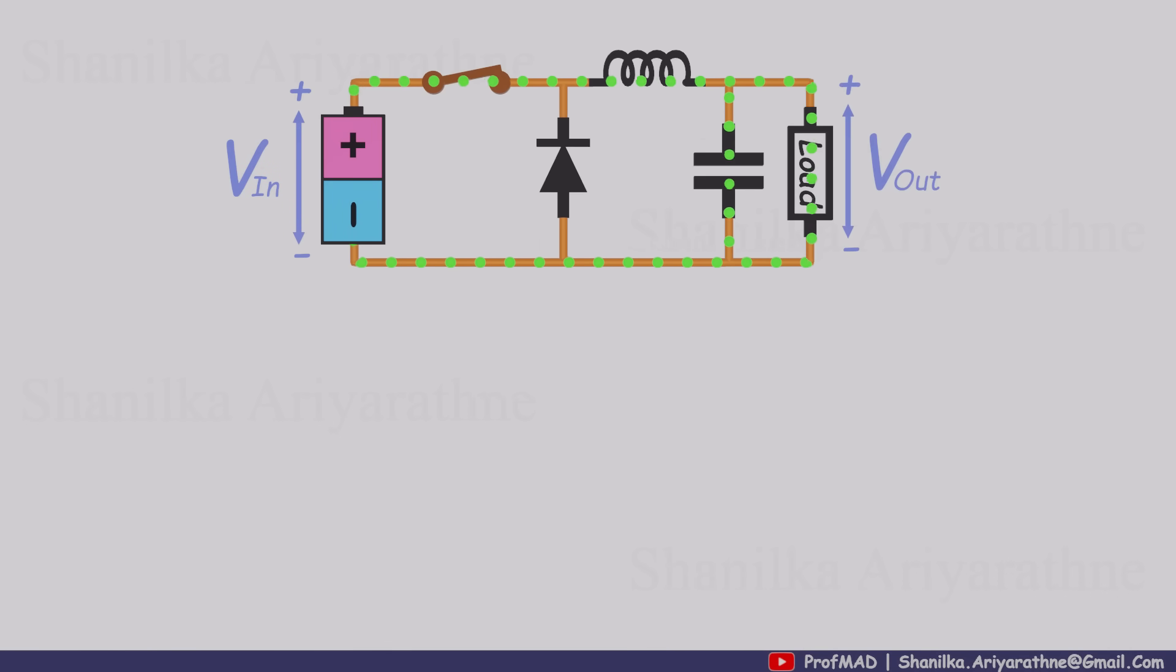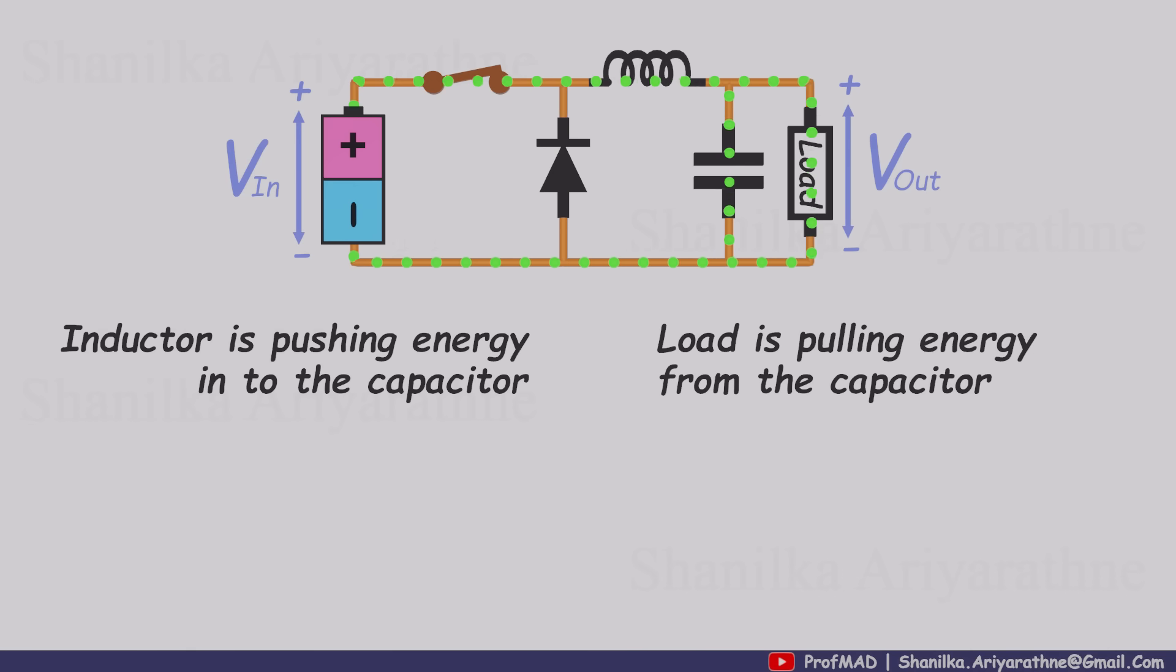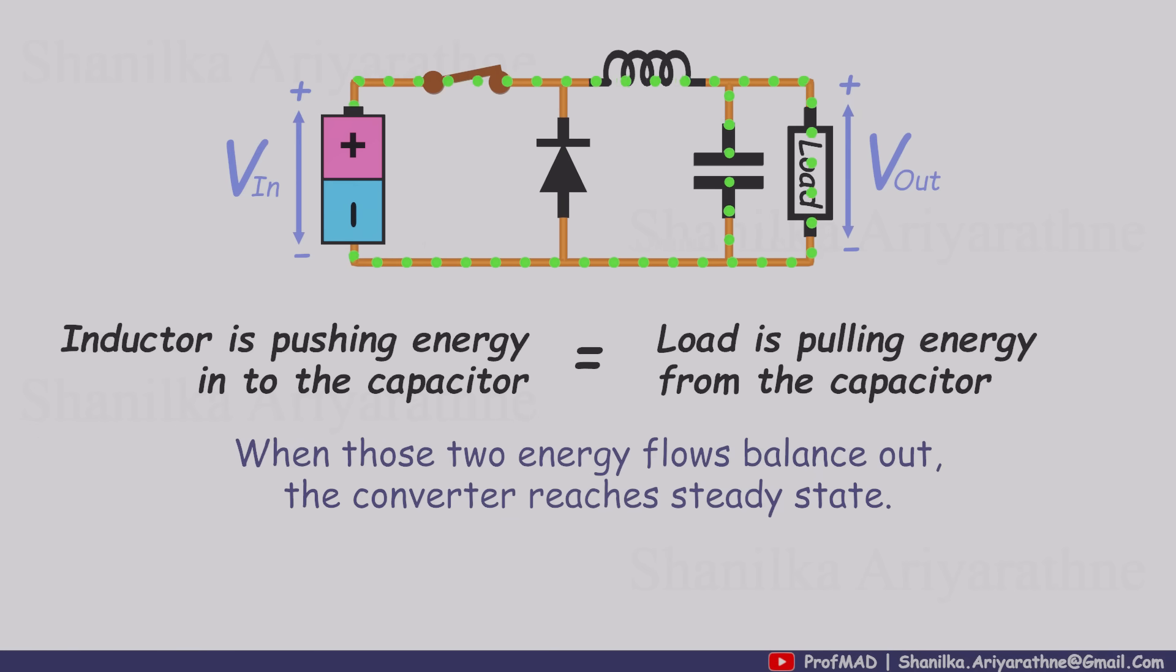Take a look at this circuit and focus on the input voltage and the output voltage. As we discussed earlier, the load is constantly pulling energy from the capacitor, while the inductor is constantly feeding energy back into it as the switch turns on and off. When those two energy flows balance each other out, the converter reaches what we call steady state.